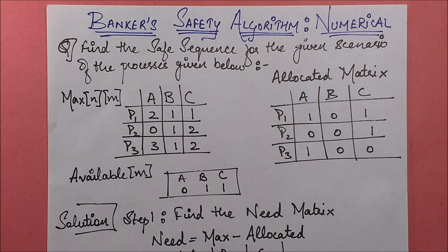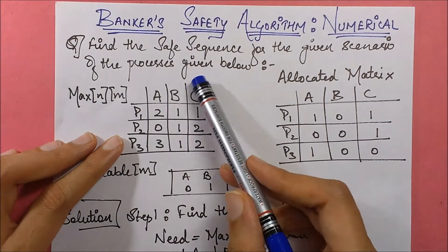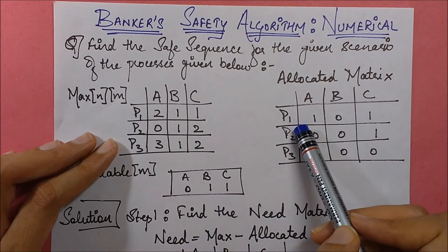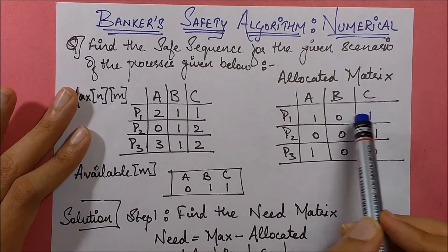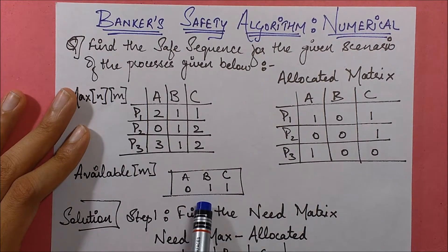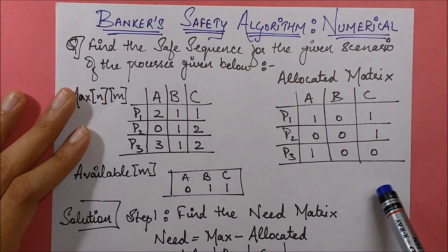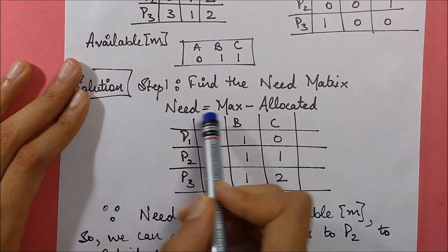The first step is to find out the need required by all the processes. The maximum need specifies the maximum need of a process; allocated specifies what resources have already been allocated to it; and available specifies the resource instances available corresponding to each resource.